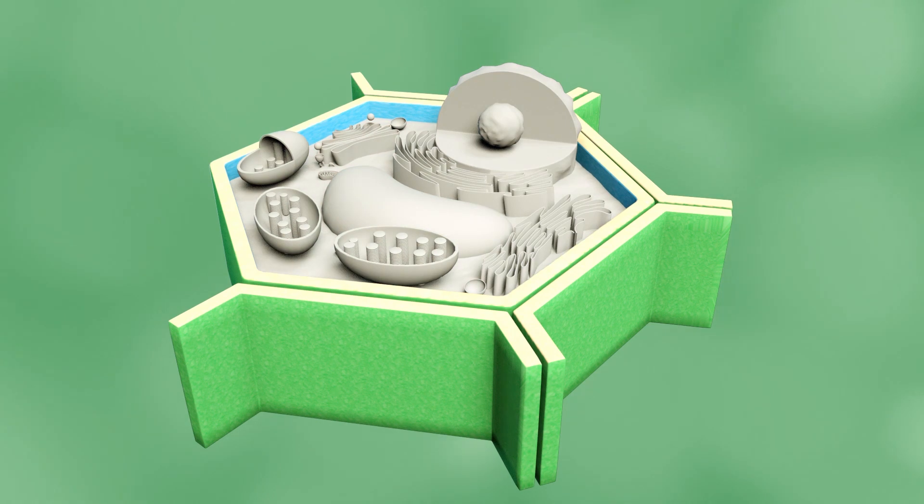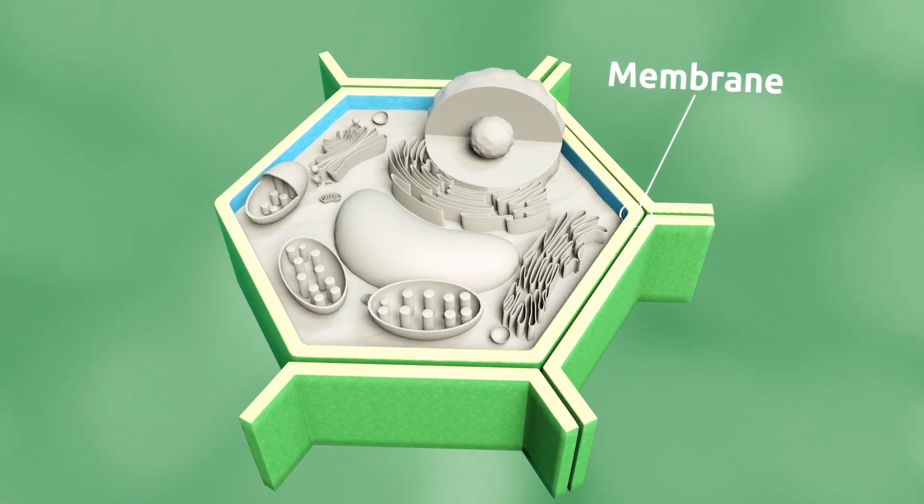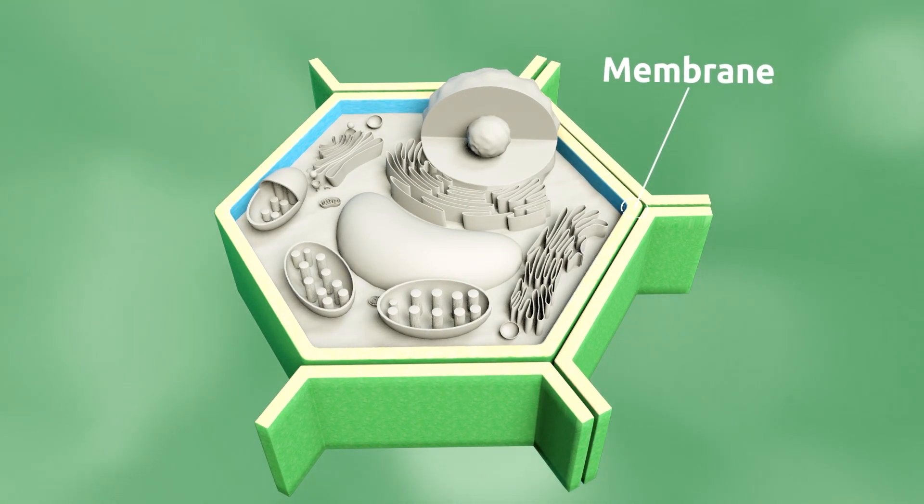The membrane is a layer that surrounds and protects the cell from the outside environment. The main function of the membrane is to allow food in and release waste substances.